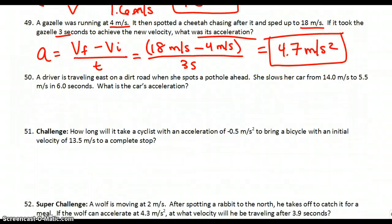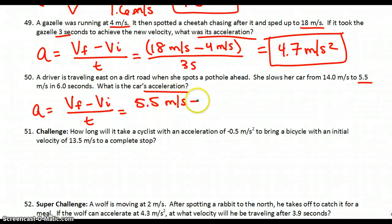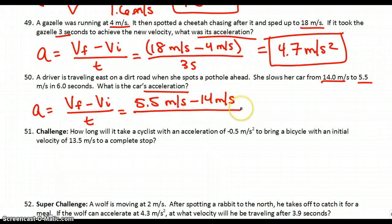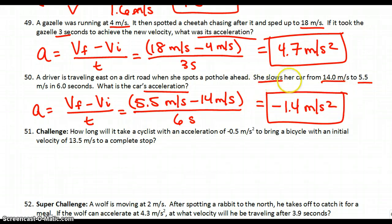50: a driver is traveling east on a dirt road when she spots a pothole ahead. She slows her car from 14 meters per second to 5.5 meters per second in 6 seconds. What is the car's acceleration? Using the same formula: final velocity is 5.5, initial velocity is 14, divided by 6 seconds. Make sure you do your subtraction first before you do your division. You get negative 1.4 meters per second squared, which means she slowed down — which makes sense because it tells you she slowed her car.